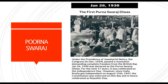On 31st December 1929 at midnight, Jawaharlal Nehru hoisted the Indian tricolor flag on the banks of river Ravi in Lahore. The Congress Working Committee declared 26 January 1930 to be Poorna Swaraj Divas, or complete independence day. For the next 17 years it was celebrated as independence day; however, since India finally got independent on 15 August 1947, the constitution was enforced on 26 January and it is hence celebrated as Republic Day.